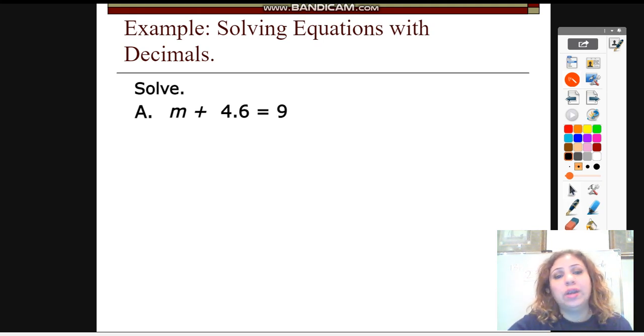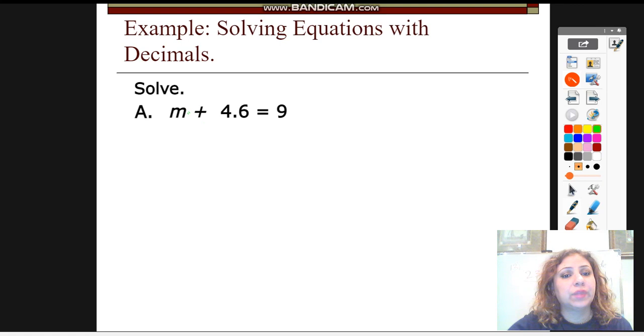So first of all, you have to decide where the place of the variable, here the variable. And I have to undo the operation that I'm having here. I am having addition. So I will undo addition by using subtraction. I'm going to subtract both sides with 4.6. Here you will get rid of this 4.6 so you can isolate or put the m alone on one side. And now you subtract 9 minus 4.6.